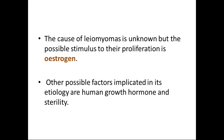The cause of leiomyoma is unknown, but the possible stimulus to proliferation is estrogen. These leiomyomas are estrogen-dependent tumors. Some studies say that estrogen inhibits the tumor suppressor gene TP53, which leads to proliferation of uterine smooth muscle cells, resulting in fibroids. Other possible factors implicated in the etiology are human growth hormone and sterility. Because estrogen is low in post-menopausal women, these fibroids automatically regress.